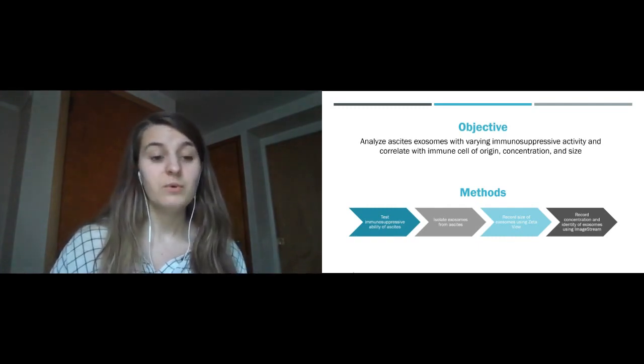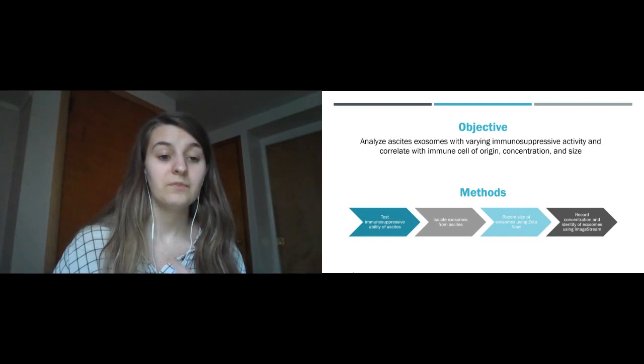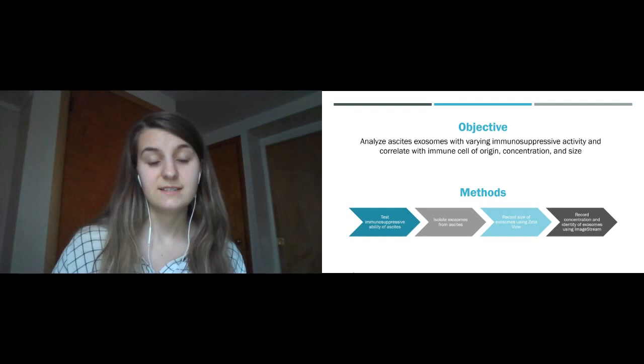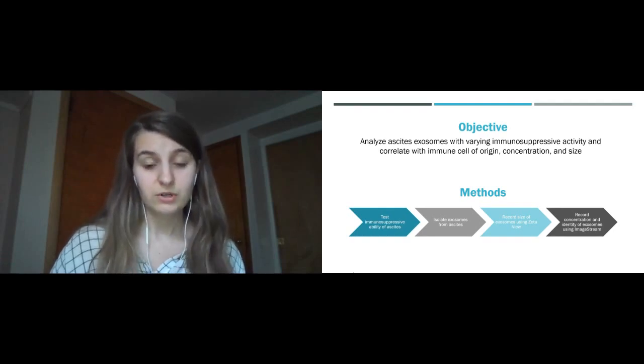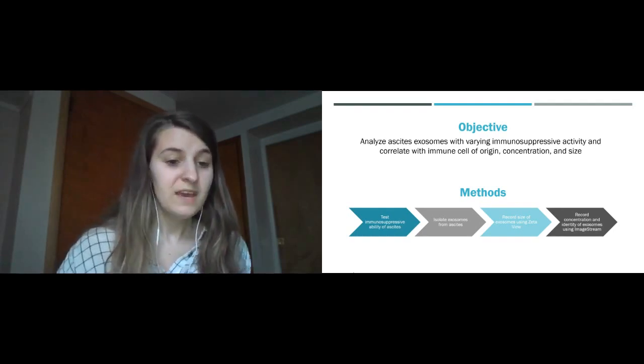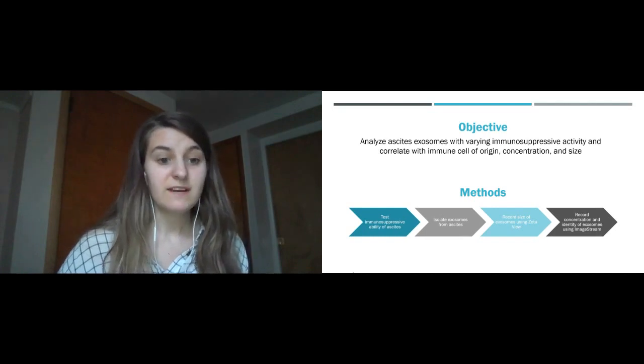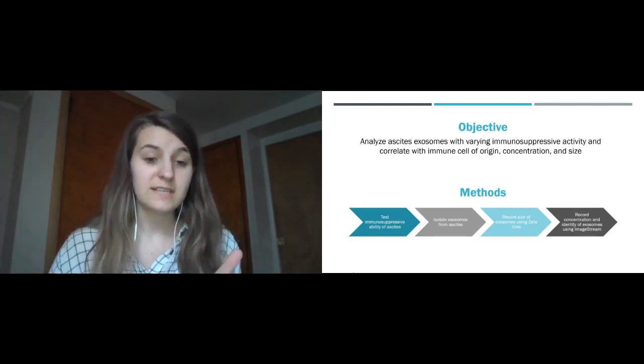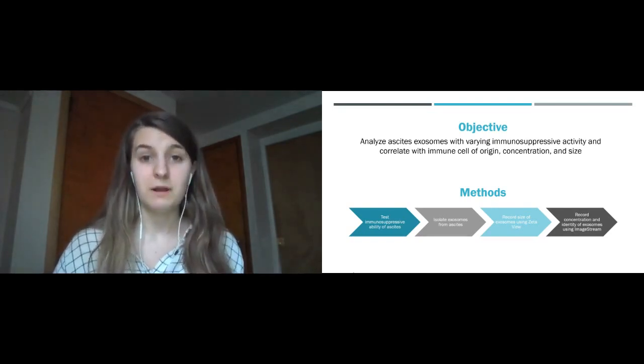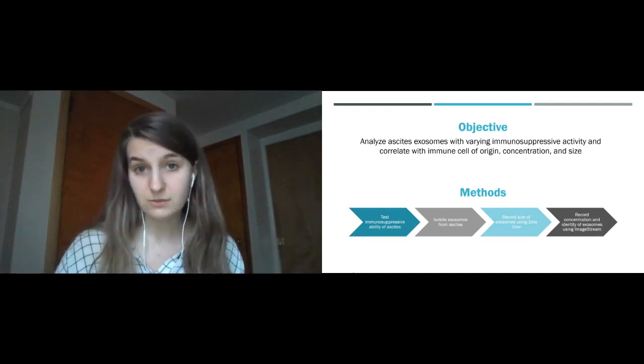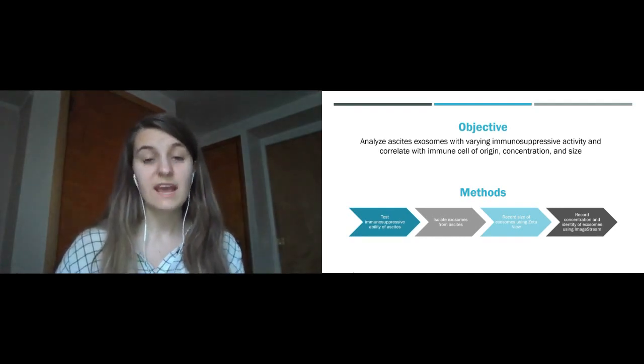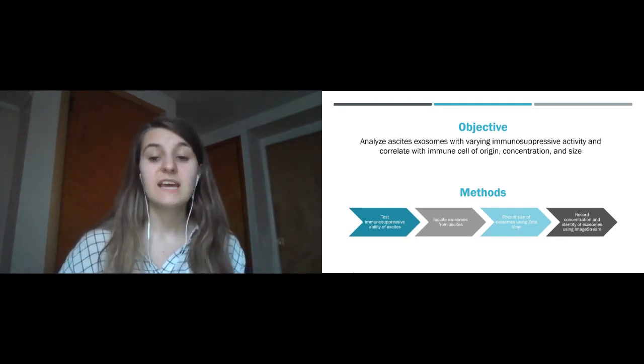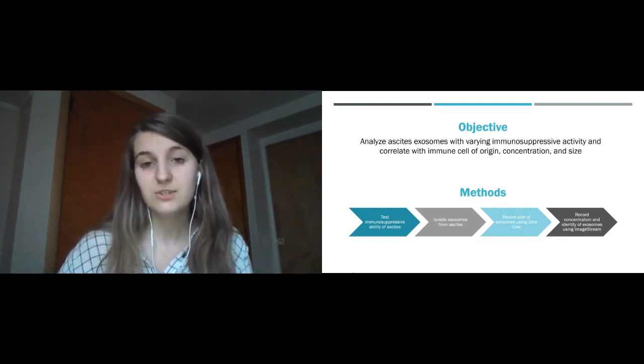To start our study, we looked at the immunosuppressive ability of the different ascites samples. Ascites again is the fluid around a tumor, an epithelial ovarian cancer tumor, and to test the immunosuppressive activity we just looked at how strong the T cells were in that sample. Then we took the ascites and isolated the exosomes from it. Then we recorded the size of those exosomes using a ZetaView nanotracking analyzer, and finally we recorded the concentration and identity of exosomes using an ImageStream flow cytometer.